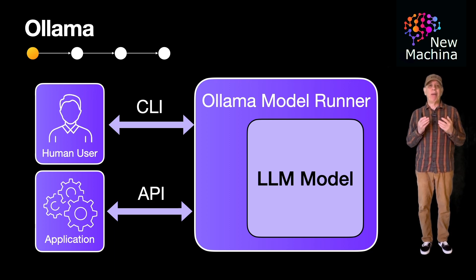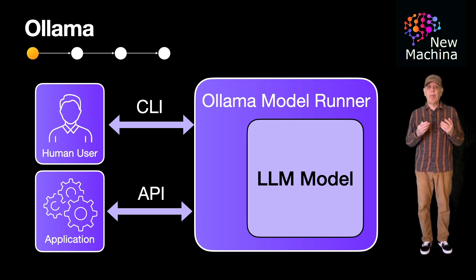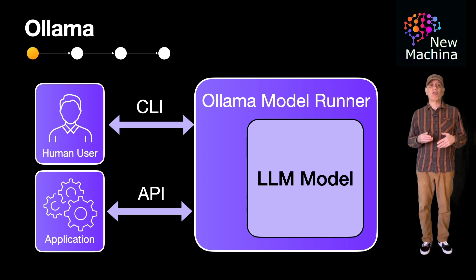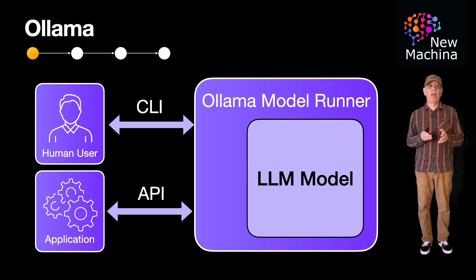Ollama is basically an application that runs as a background process on your MacBook or Windows machine. It provides a simple command line interface and API to interact with models such as the Mistral family of models, the Meta models, or Google's Gemma family of models, making it easy for system builders to integrate with a locally deployed and running model.